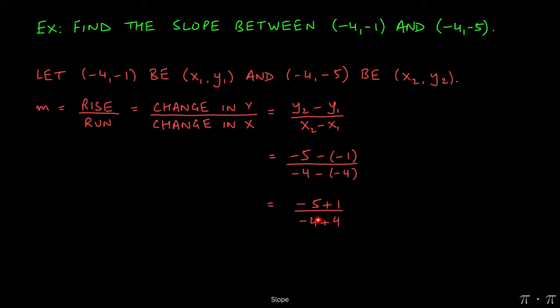If we simplify the numerator and simplify the denominator, we get negative 5 plus 1 as negative 4, and negative 4 plus 4 as 0.